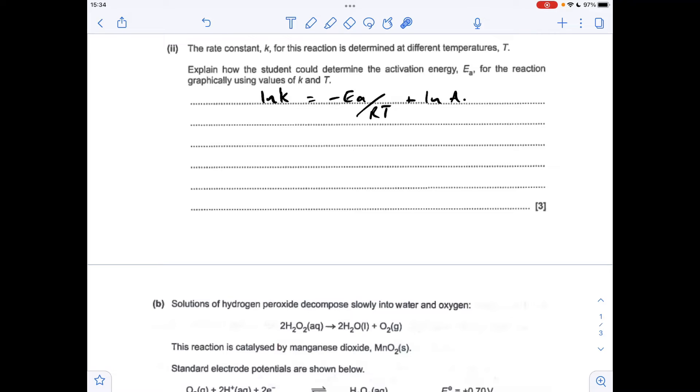Moving on to the next part of the question. Still with rates, explain how the student could determine the activation energy for the reaction graphically using values of k and T. It's obviously to do with the Arrhenius equation. That's how the Arrhenius equation is presented on the datasheet. I'm just going to write it out slightly differently.